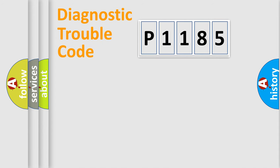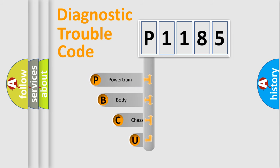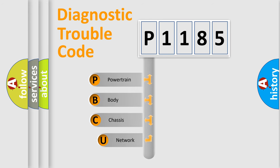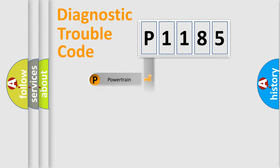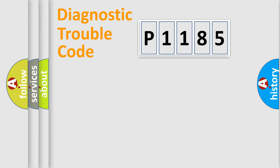Let's do this. First, let's look at the history of diagnostic fault code composition according to the OBD2 protocol, which is unified for all automakers since 2000. We divide the electric system of automobile into the four basic units: Powertrain, Body, Chassis, and Network.